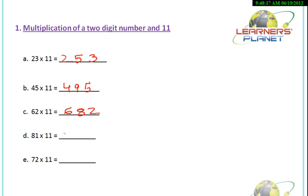81 into 11: write 8 over here and 1 over here. 8 plus 1 is 9, so the result is 8, 9, 1. 72 into 11: write 7 here and 2 here, and 7 plus 2 will be 9. We can see it's actually very easy, and you can have a good grip on this if you have practiced well.